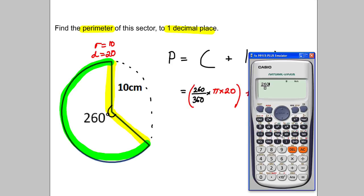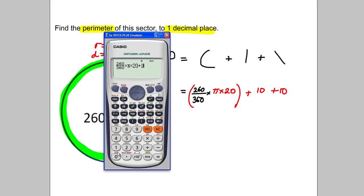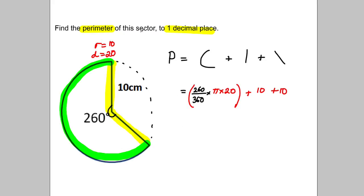260 out of 360, multiply that by pi, multiply that by 20, and now I'm going to add the two tens. I get 65.378.